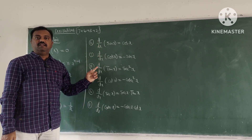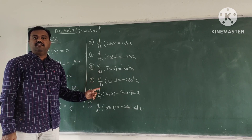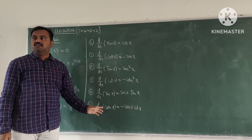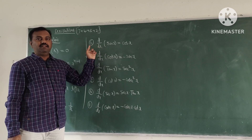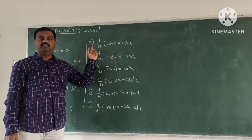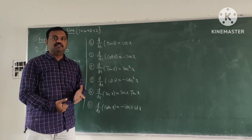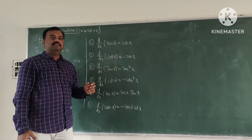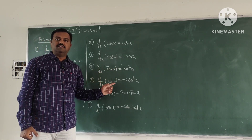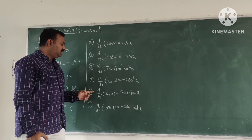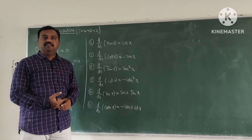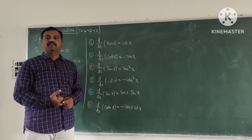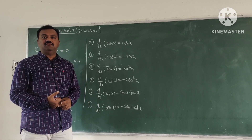Derivative of sin x is cos x. Derivative of cos x is minus sin x. D by DX of tan x is equal to secant square x. D by DX of cot x is equal to minus cosecant square x. D by DX of secant x is equal to secant x into tan x. Derivative of cosecant x is minus cosecant x into cot x.